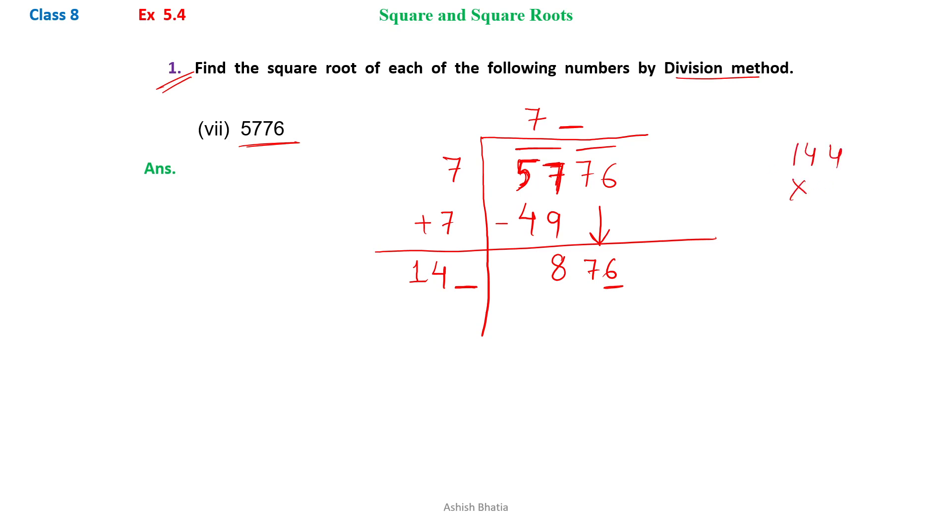So we will try by 4. 4 fours are 16, 4 fours are 16 and 1, 17, 1 carry over. 4 fours are 4 and 1, 5, 576. So this will not work, so we have to take another number, which is 6.